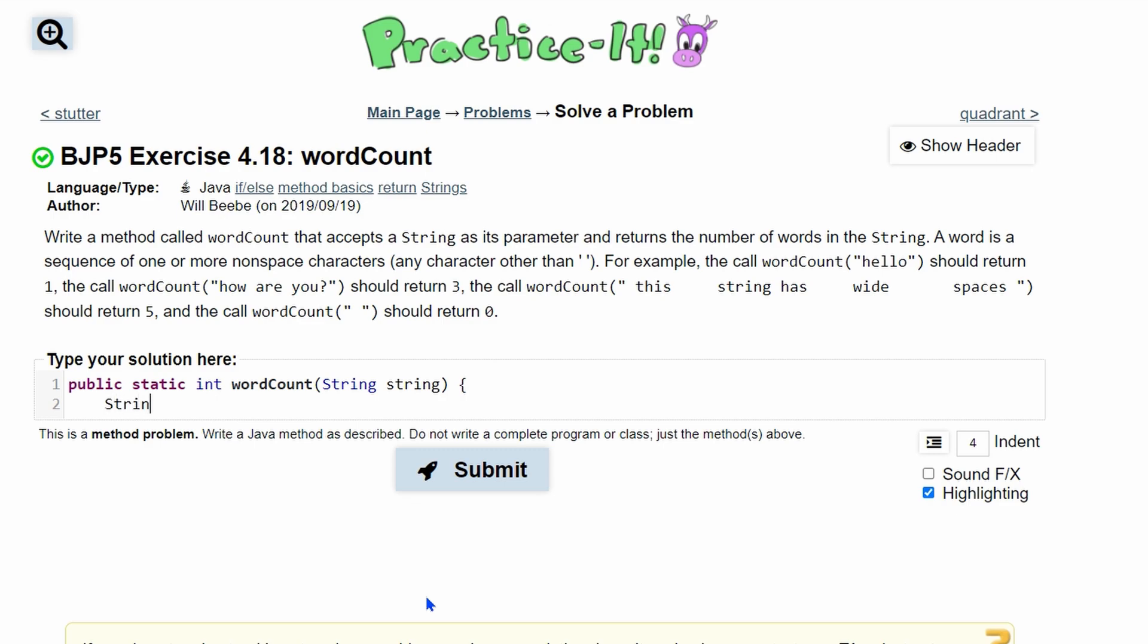For this, we are going to make a new instance of our StringTokenizer class. We're going to call it str. We're going to set it equal to a new StringTokenizer, where we are going to pass in the string we want to analyze, and then we are going to pass in our delimiter.